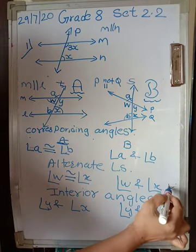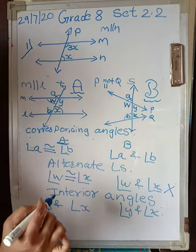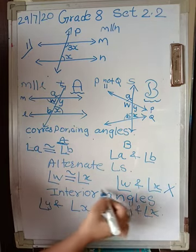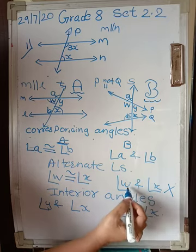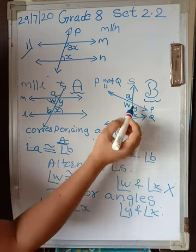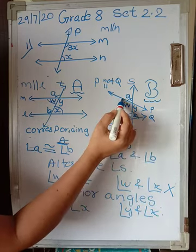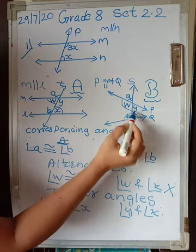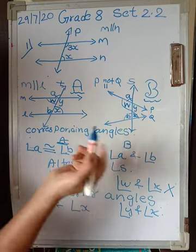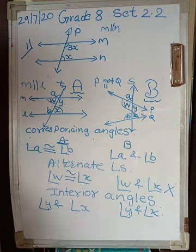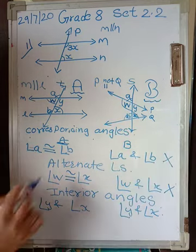That is not the case with Case B. W and X — you can see X is this and W is this. Looking at the measures itself, you will see they are not congruent. Here also they are not congruent.